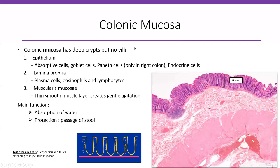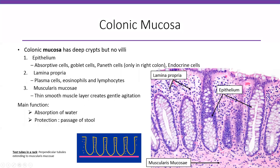Colonic mucosa is composed of deep crypts. Notice that there is no villous formation — the surface is very smooth. On higher power, the mucosa consists of epithelium lining the surface and going deep into the crypts. It looks like tubes in a rack, and in normal conditions they are equidistant from each other.